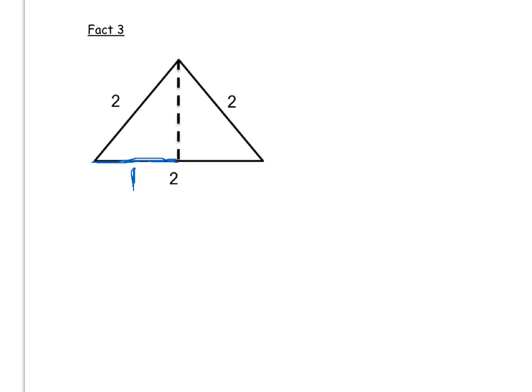And we can find this last side by, yet again, using Pythagoras. So, this time, because we're finding a shorter side, you're going to do the following. You're going to do 2 squared minus 1 squared to get that shorter side, which is equal to 3. So, this side is the square root of 3.